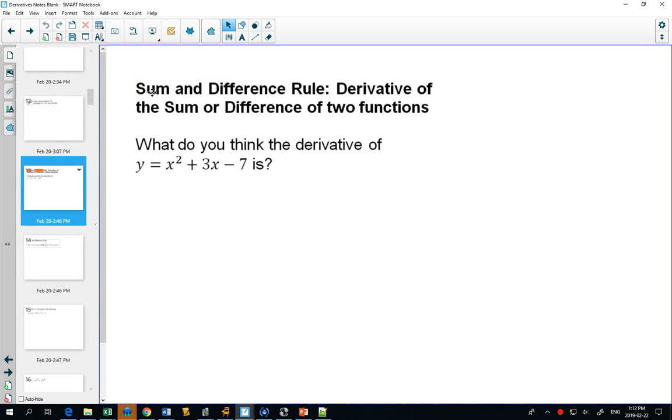Up till now we've learned the power rule, which means you can bring that exponent out in front and subtract one from the exponent. It's way faster than using the definition of the derivative. The next rule that we look at is the sum and difference rule.